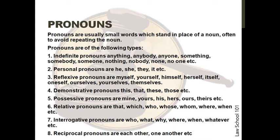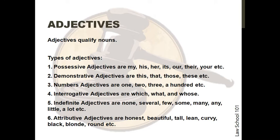The next topic is adjectives. Adjectives qualify nouns. The types of adjectives are as follows: Possessive adjectives are my, his, her, its, ours, theirs, and yours. Demonstrative adjectives are this, that, those, and these. Number adjectives are one, two, three, a hundred, etc. Interrogative adjectives are which, what, and whose. Indefinite adjectives are none, several, few, some, many, any, little, and a lot. Attributive adjectives are honest, beautiful, tall, mean, curvy, black, blonde, brown, etc.